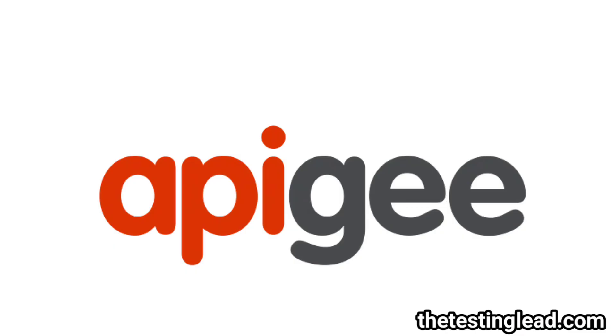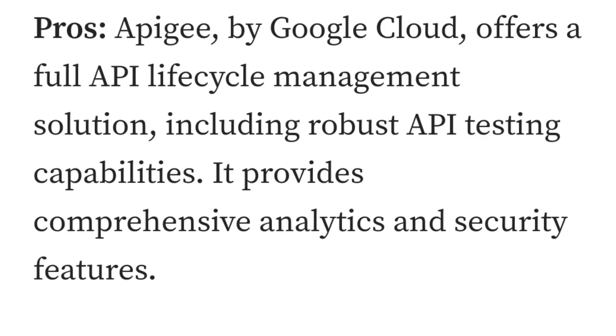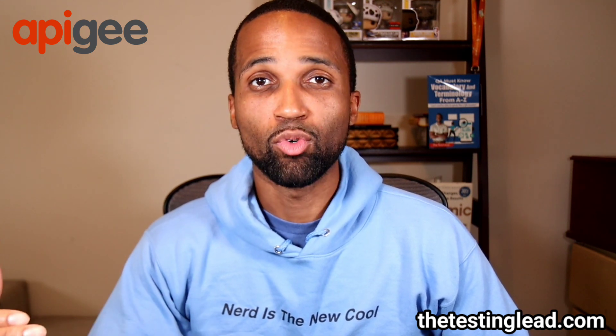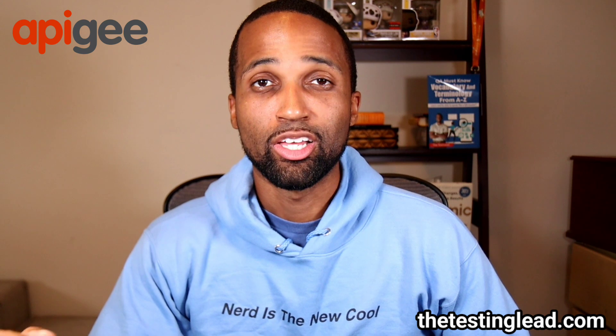And finally, Apigee. Apigee by Google Cloud offers a full API lifecycle management solution, including robust API testing capabilities. It provides comprehensive analytics and security features. For the cons: it's designed for enterprise-level or higher-level API testing, so for smaller projects it may be overkill.